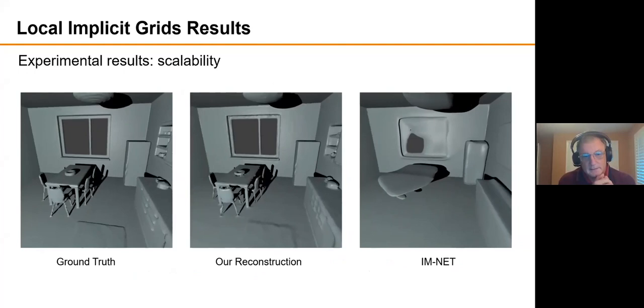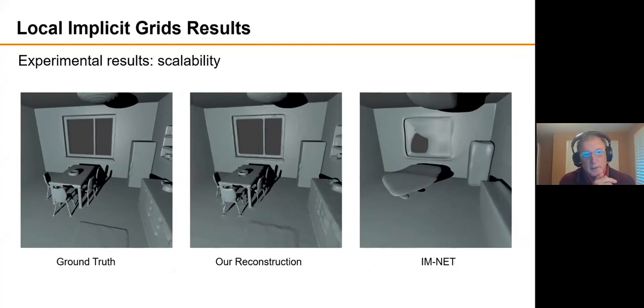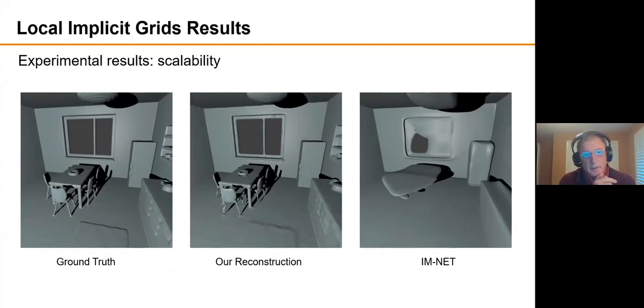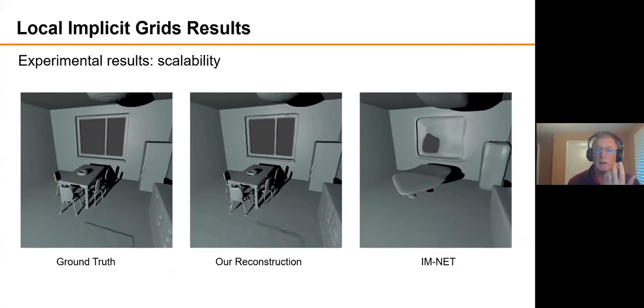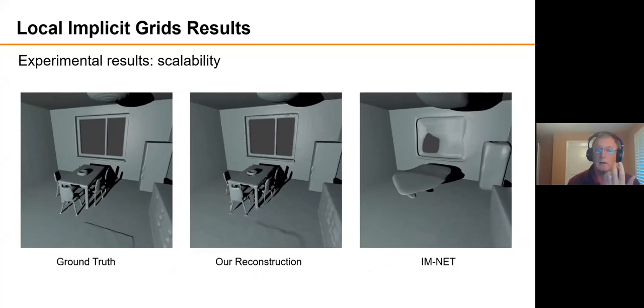And another kind of straw man comparison, we can reconstruct. So if you're given point samples, a very sparse set of point samples, and then asked to reconstruct the scene. Of course, ours is going to be able to encode and decode the local shapes better than IM-NET, which has to encode the entire scene all in one big latent vector. So you wouldn't expect that to work, and in fact it doesn't.